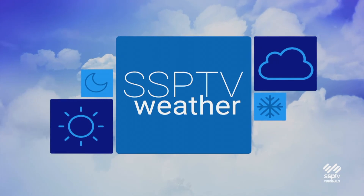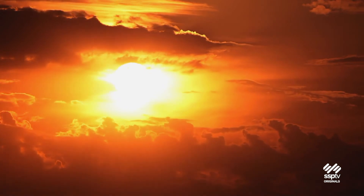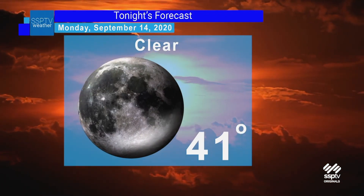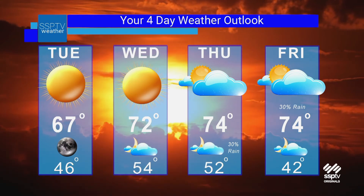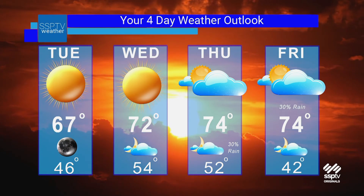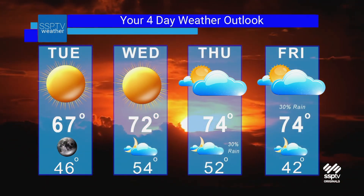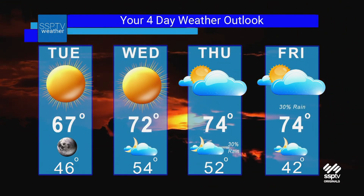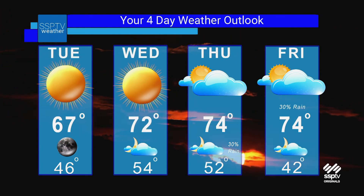Time now for weather on SSPTV News. It looks like a calm work week, weather-wise. Tonight is clear with a low of 41 degrees. Tuesday is sunny with highs in the upper 60s; Tuesday night clear with a low of 46. Wednesday is sunny with a high of 72; at night partly cloudy, lows in the mid-50s. Thursday, mostly cloudy with a high of 74; Thursday night a 30% chance of showers after 8 p.m., low of 52. Friday, a 30% chance of showers but mostly sunny with highs in the mid-60s; Friday night mostly clear with a low of 42 degrees.